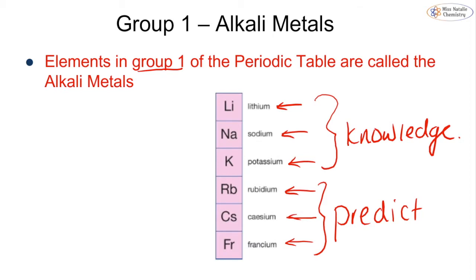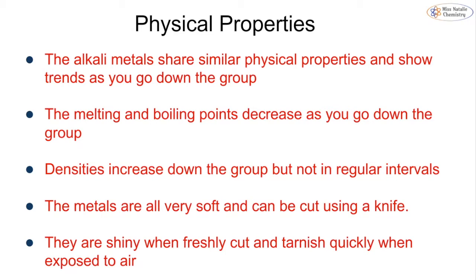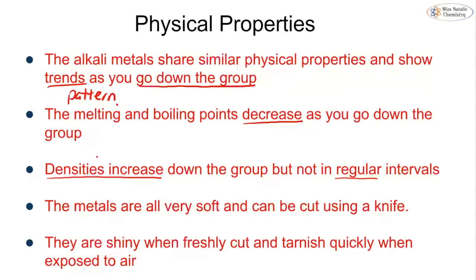The alkali metals share similar physical properties and they show a trend or pattern as you go down the group, from lithium down to francium. The first trend is melting and boiling point, which decrease as you go down the group — so lithium has quite a high melting point and it gets lower towards francium. Densities increase down the group, but this trend is not quite as regular as others.